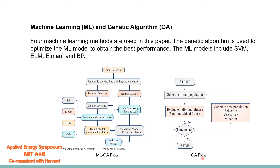This is the machine learning combined with GA flow. This is the standard GA optimization process. The first step is to generate the initial population, then evaluate the individual fitness, and then rank the individual fitness. We iterate until convergence, performing selection, crossover, and mutation to generate a new population. Then we obtain a new optimized result.